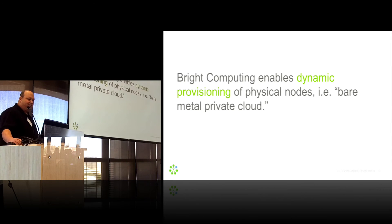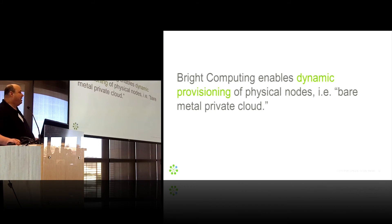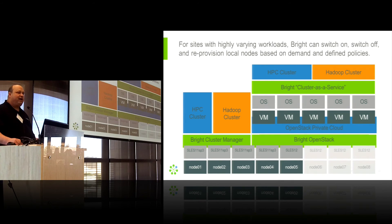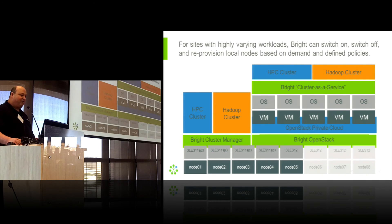There's one more very important thing I wanted to mention: Dynamic Provisioning of Physical Nodes, which I call a bare-metal private cloud. Going back to our diagram, I want you to pay attention to the nodes on the right that are grayed out — those are being used by OpenStack. And note that on nodes one through five, I've assigned an operating system, names, and configurations to them. That's going to become important.